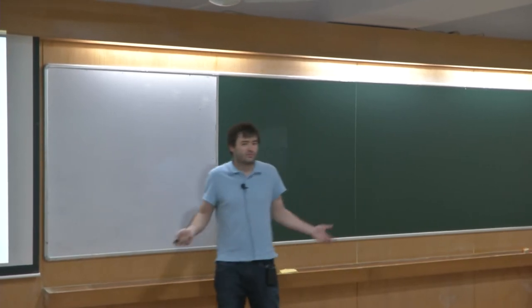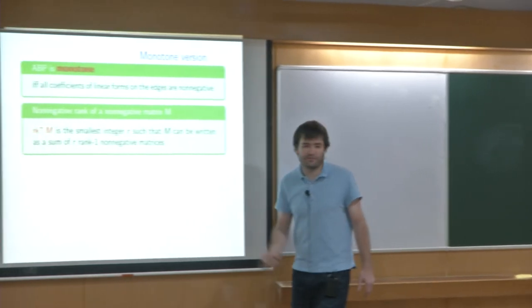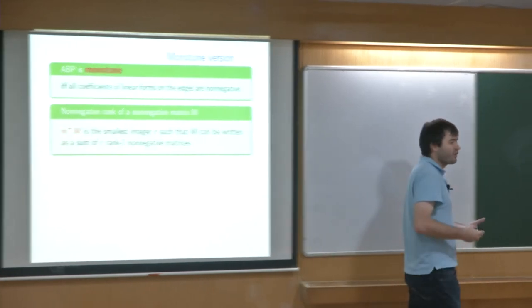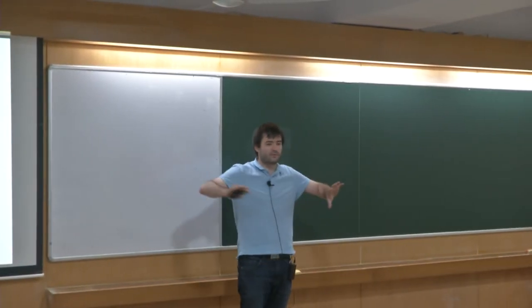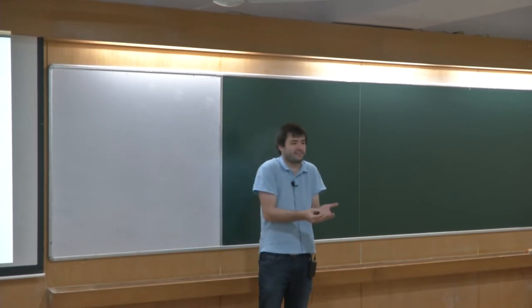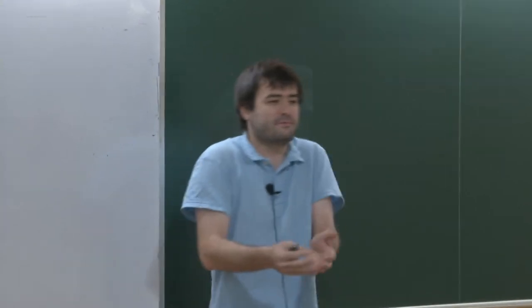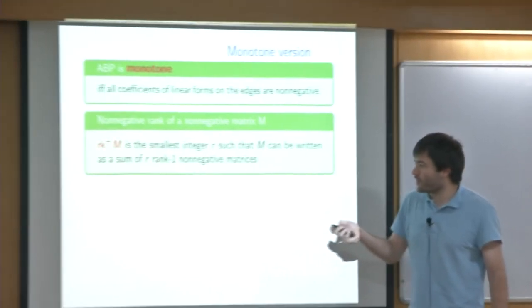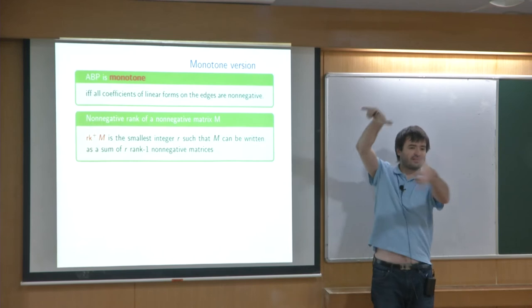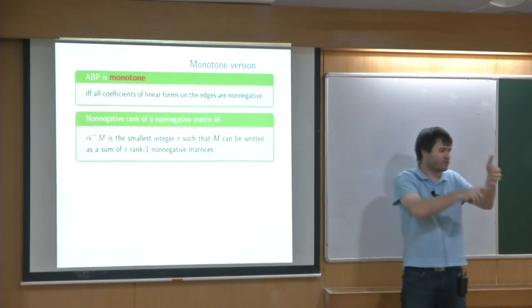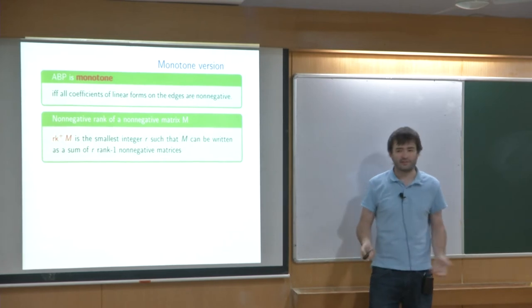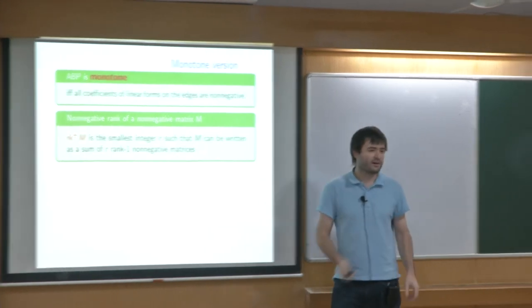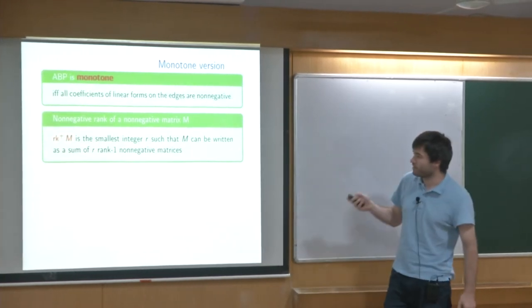Nisan's characterization is via rank, and there is a very natural definition of non-negative rank. The non-negative rank of a matrix M is defined analogously to rank: just as rank is the minimal number of rank-one matrices summing to M, the non-negative rank is the minimal number r such that M can be written as a sum of r rank-one non-negative matrices — that is, rank-one matrices whose column and row vectors all have non-negative coefficients.